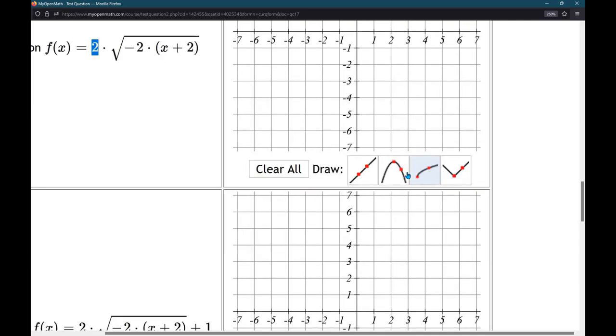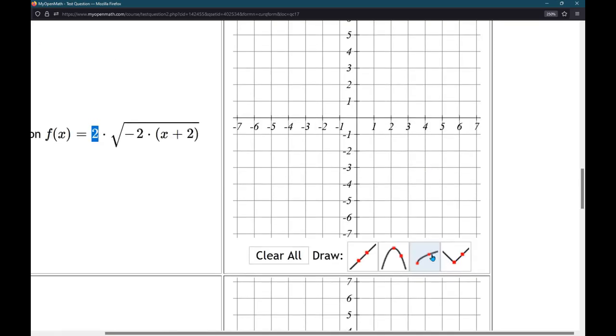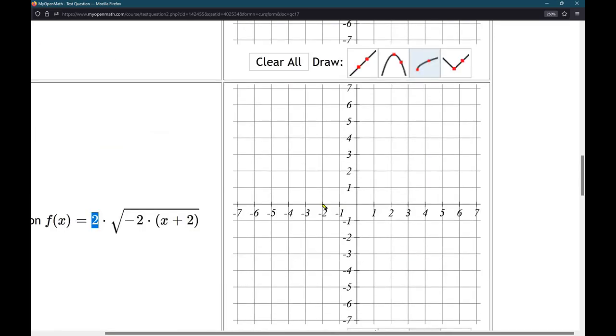So, click on the right square root base graph. Negative 2, 0 right here. Negative 4, positive 2. Right there. Okay.